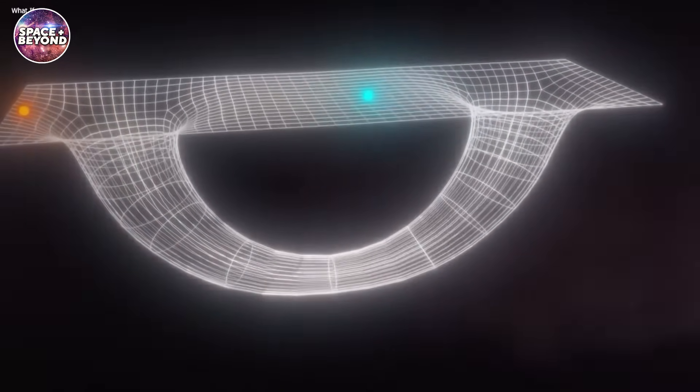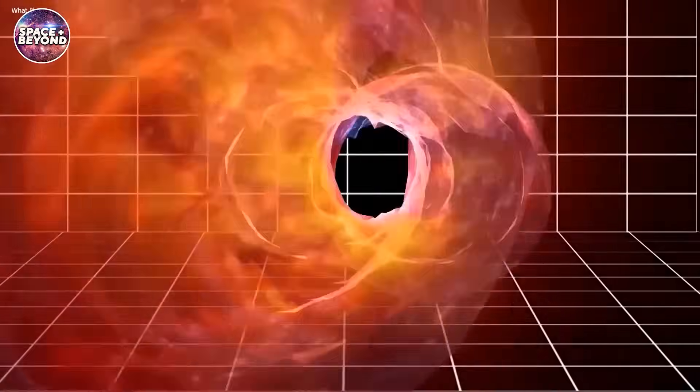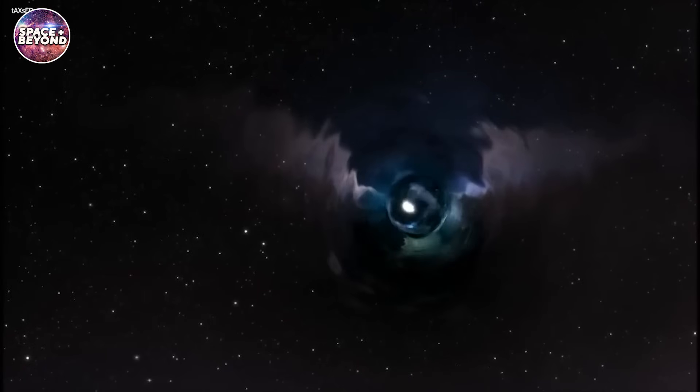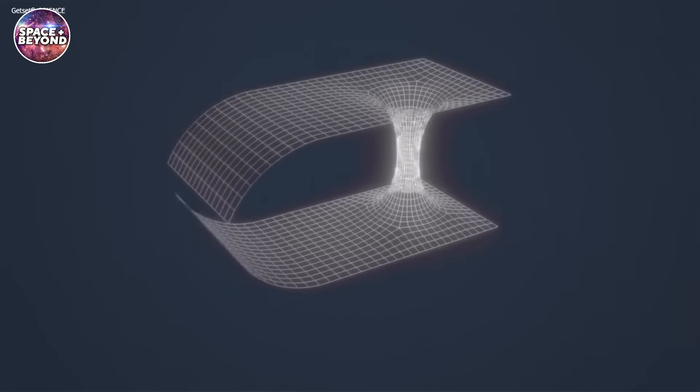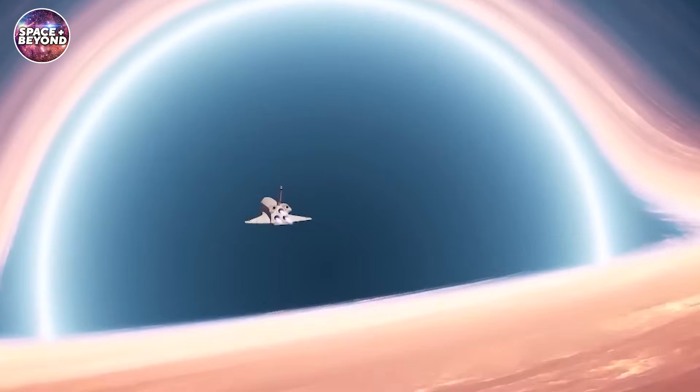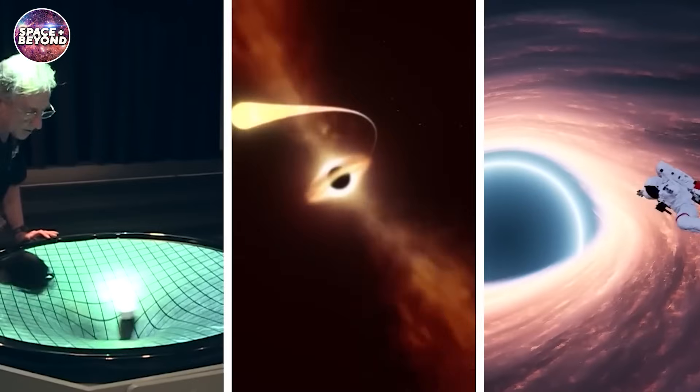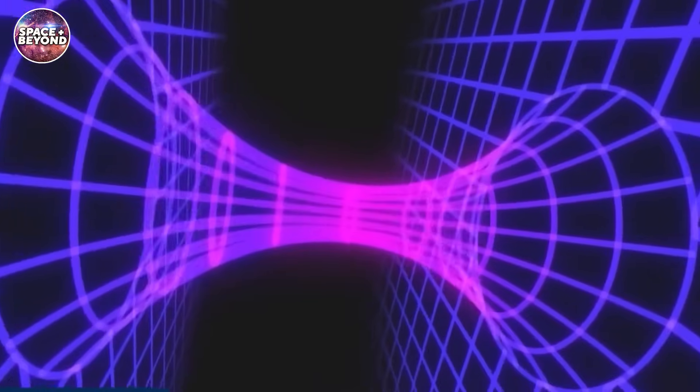He demonstrated that a spinning black hole would collapse not unto a single subatomic point, but into a ring of fire, such that if a space probe is sent through the ring of fire it wouldn't be crushed by the immense gravity, but would emerge unscathed through the Einstein-Rosen bridge and out a white hole.